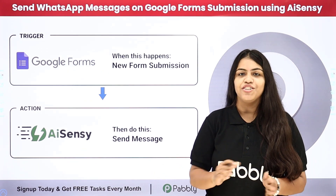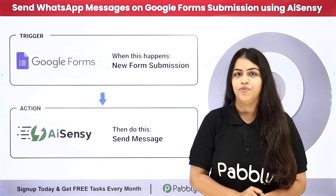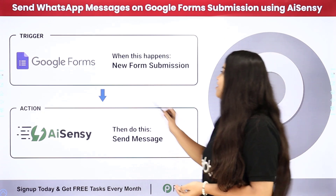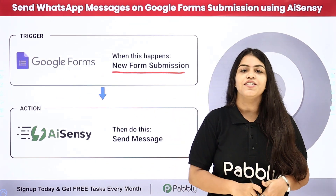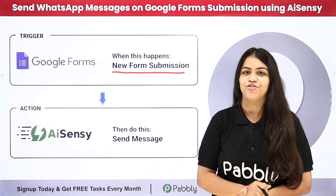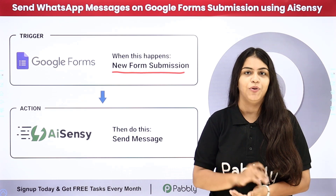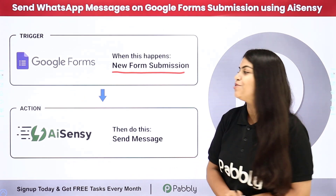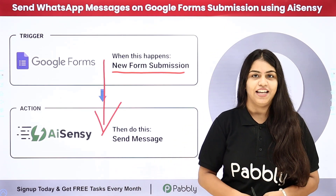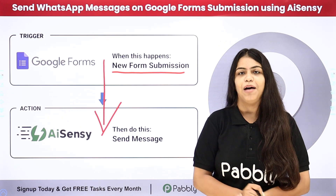I am managing customer interactions for an events company and we use Google Forms to collect registrant details. As soon as a new Google Form is submitted — that is, as soon as we collect new registrant details — an automated WhatsApp message should be sent to that registrant, so that I can maintain effective communication.